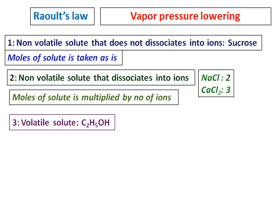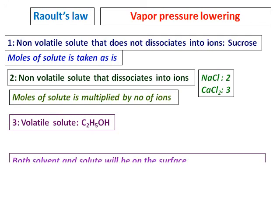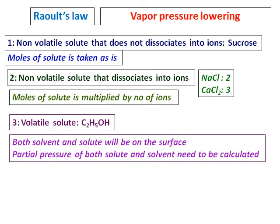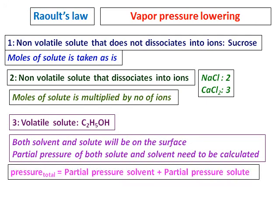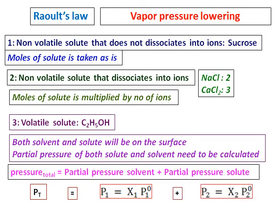In case of a volatile solute like ethyl alcohol, both the solvent and the solute will be on the surface. Hence, when you calculate the partial pressure, the contribution from both solute and solvent should be considered. Therefore, the total pressure equals the partial pressure of the solvent plus the partial pressure of the solute. Applying Raoult's Law: P = x₁·P₁⁰ (partial pressure from solvent) + x₂·P₂⁰ (partial pressure from solute).